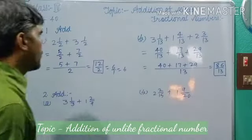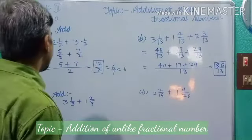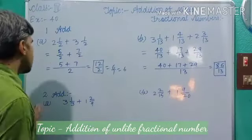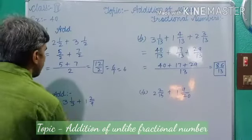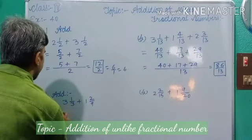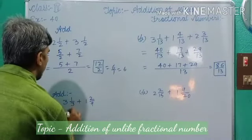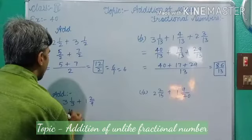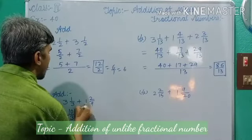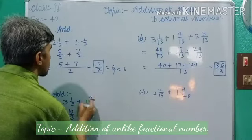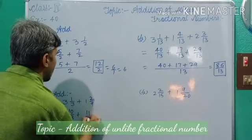Now, second type questions. Dear students, same process here. 3 threes are 9, plus 1 gives 10 by 3. Plus 9 ones are 9, plus 2 gives 11 by 9.